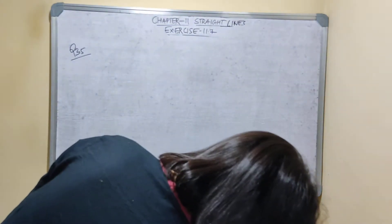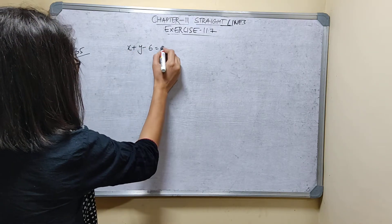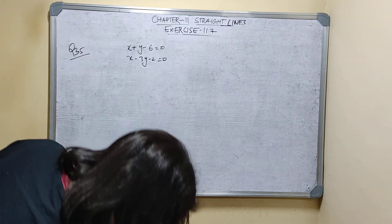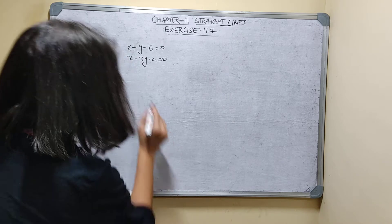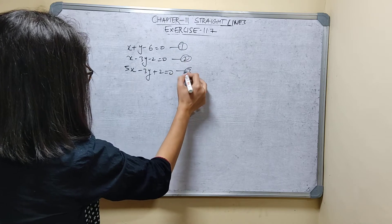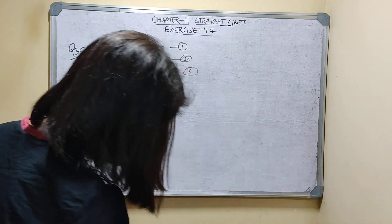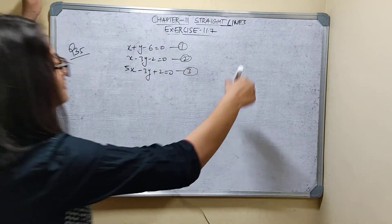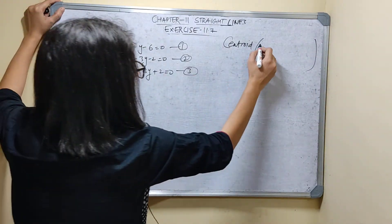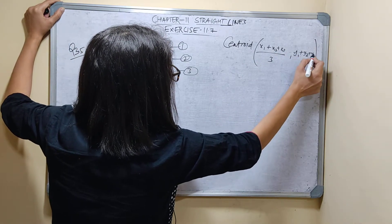Question number 35. Find the area of the triangle formed by the lines: x plus y minus 6 is equal to 0, x minus 3y minus 2 is equal to 0, and 5x minus 3y plus 2 is equal to 0. These are the first, second, and third equations. Also find the coordinates of the centroid of the triangle. The formula for centroid is: x1 plus x2 plus x3 upon 3, y1 plus y2 plus y3 upon 3.